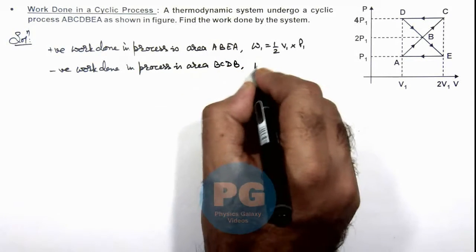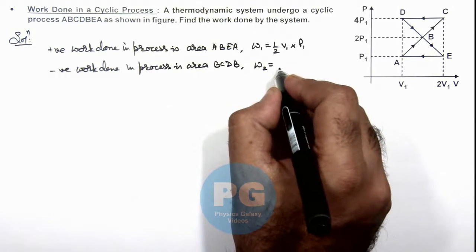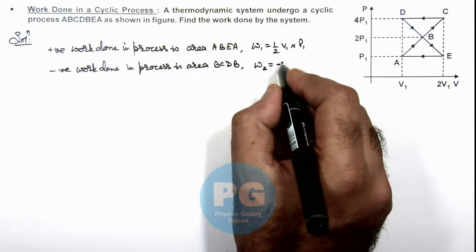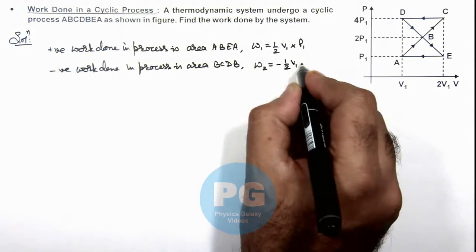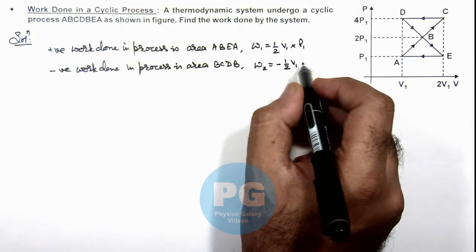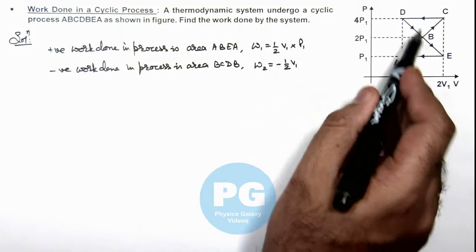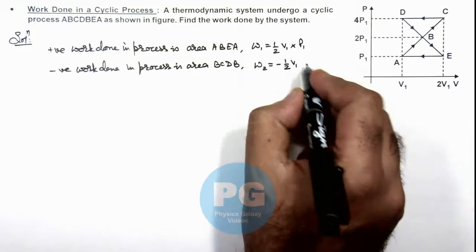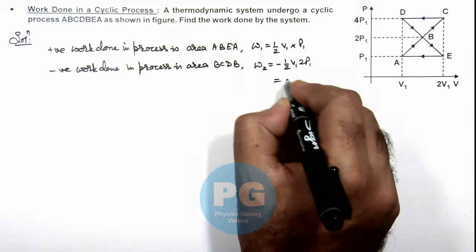And that is equal to W₂, which we can calculate as negative of half V₁ multiplied by 2P₁, so this value is equal to P₁V₁.